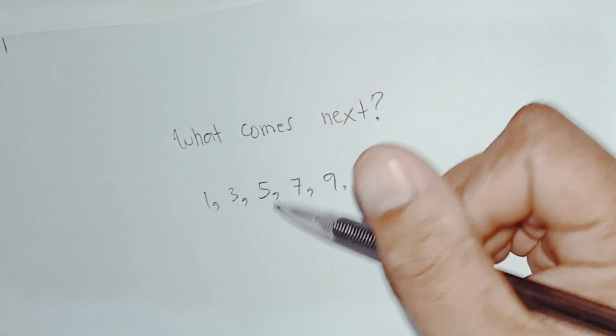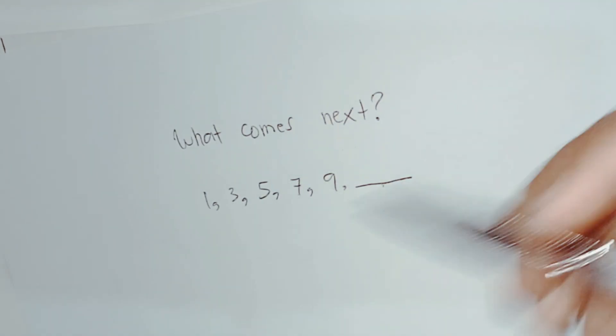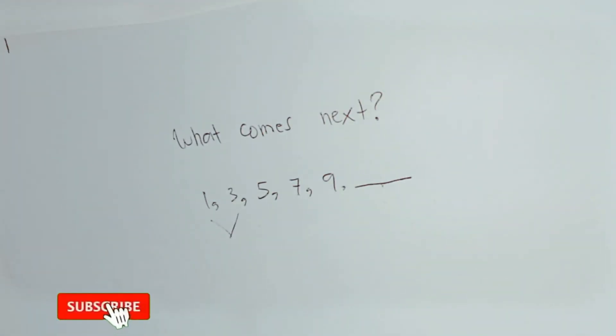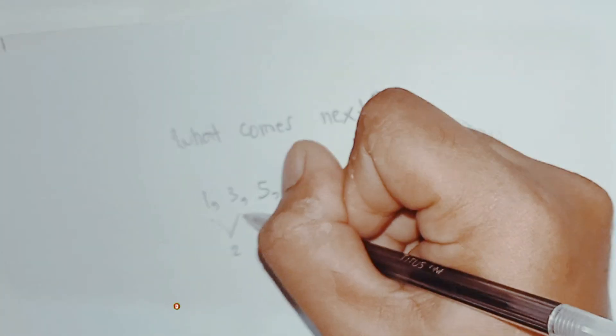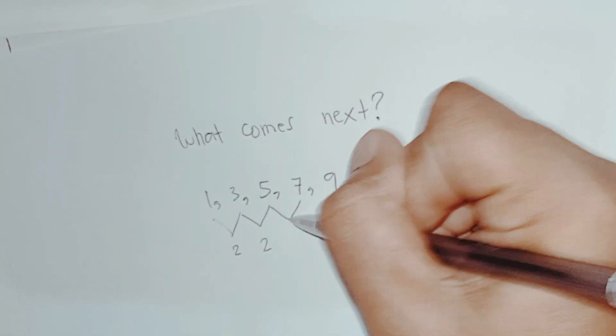So let's try to figure out the common difference of the sequence. One and three - obviously the common difference is two. The second one is three and five, so it's two again. And now we continue.